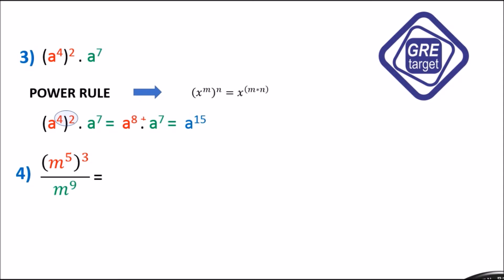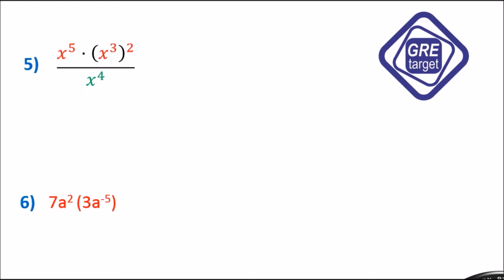Example 4: Applying the power rule to the first term in the numerator gives m raised to 15, divided by m raised to 9. Then applying the quotient rule — x raised to m divided by x raised to n — we subtract the exponents to get m raised to 6.